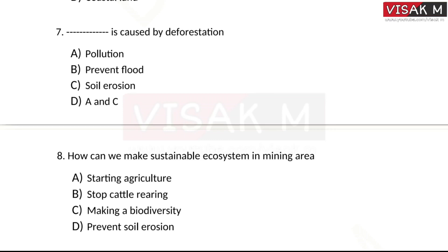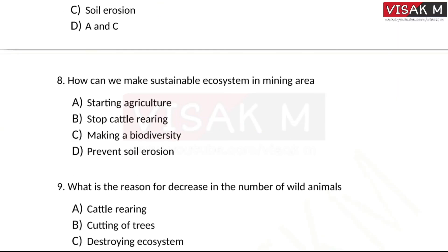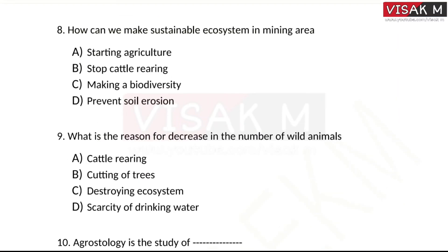Next question: how can we make a sustainable ecosystem in a mining area? Options: A) start agriculture, B) stop cattle rearing, C) making a biodiversity cover of plants and animals, D) prevent soil erosion. The right answer is option C — making a biodiversity cover, creating a sustainable ecological balance.